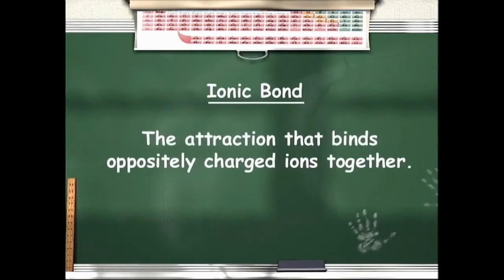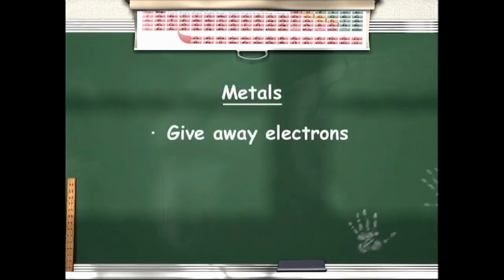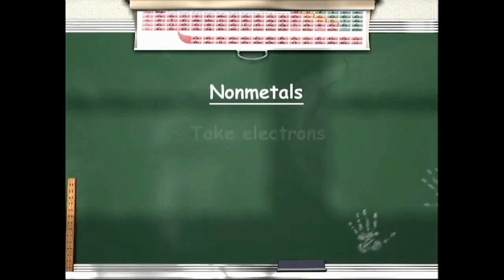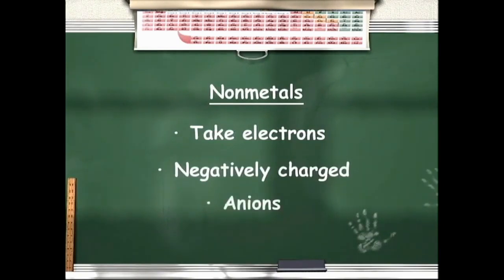When a metal combines chemically with a non-metal to form an ionic compound, one or more electrons are transferred from each atom of the metal to one or more atoms of the non-metal. Metals tend to give away electrons, becoming positively charged cations. Non-metals tend to take or steal electrons, becoming negatively charged anions. This electron transfer occurs so that an atom might obtain a noble gas electron distribution, increasing stability.